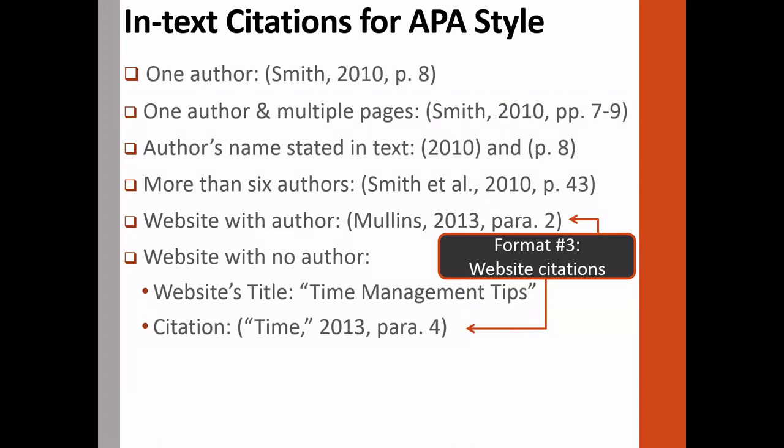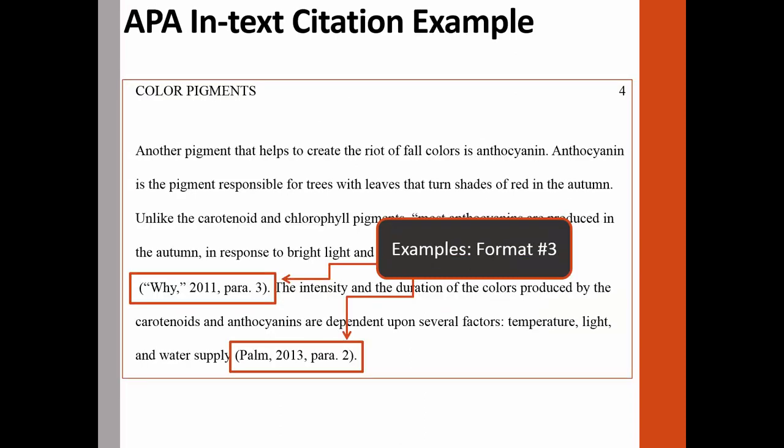For sources with authors obtained from websites, continue to begin the in-text citation with the author's last name, followed by the publication date, and because there are no page numbers for websites, cite the paragraph number from which the borrowed information was obtained. If the information does not have an author, cite in text the first few words of the title — provide enough information so your reader will be able to find the source on your reference page. Here we have two in-text citations from websites. The first is from a website without an author, so the first word 'why' is used to signal the reader to the correct reference page citation, followed by the year and the paragraph number. In the second citation there is an author, so the author's last name is included, followed by the year of publication and then the paragraph number.